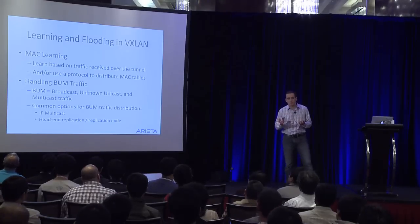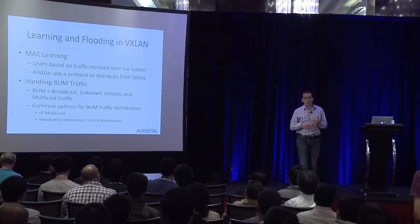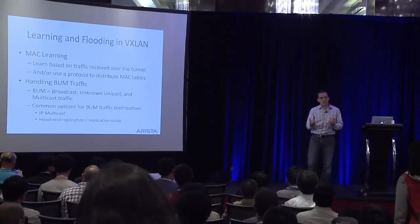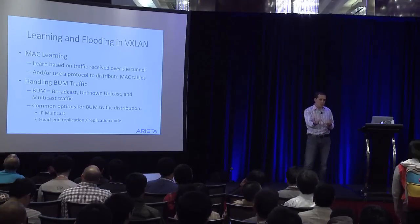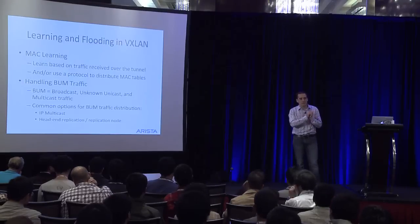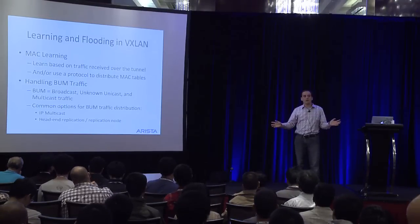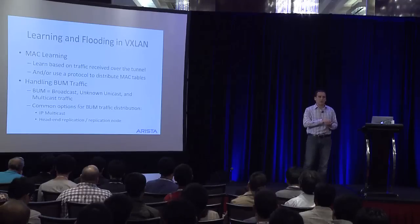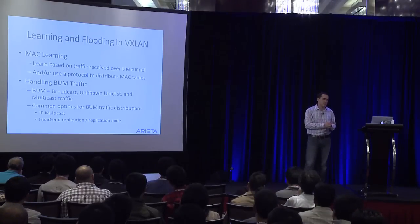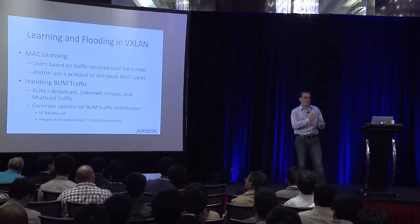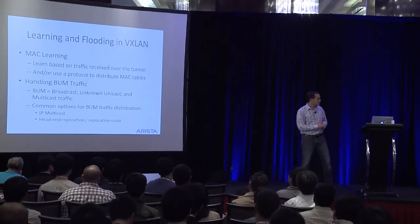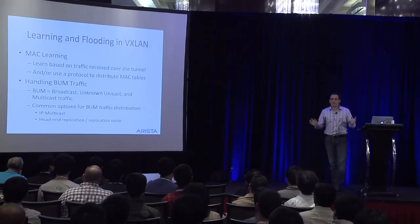For flooding, there are two options. One is to use IP multicast — every VNI has an IP multicast group associated with it, all the VTEPs that care about that VNI join that multicast group, and you encapsulate the packet and send it to the multicast group, which distributes it efficiently across your network. The other option is head-end replication, often combined with a purpose-built replication node. Instead of multicast, you send a unicast packet to every VTEP that cares about that VNI, with an outside mechanism needed to know the full list of VTEPs.